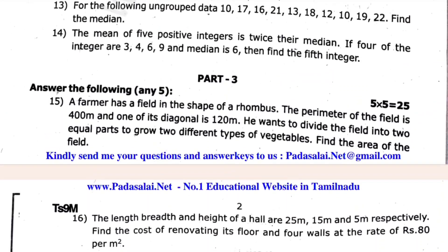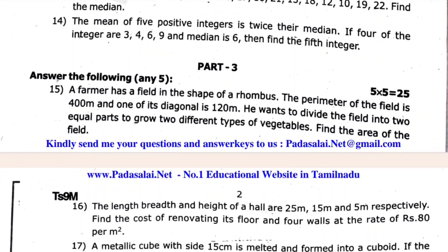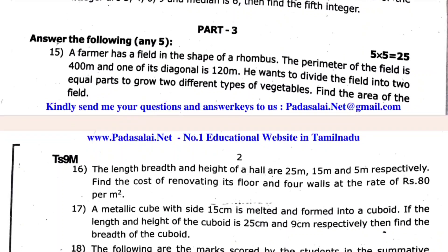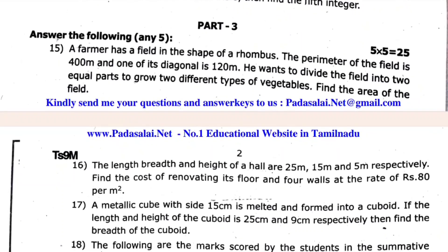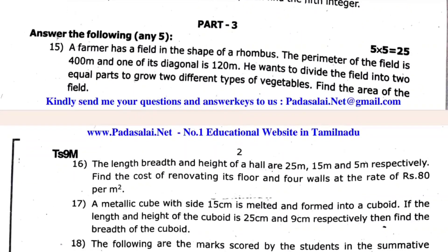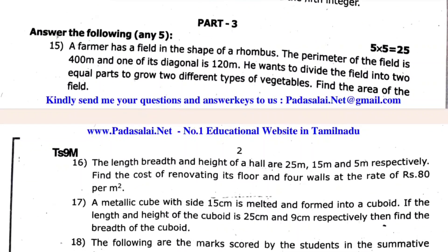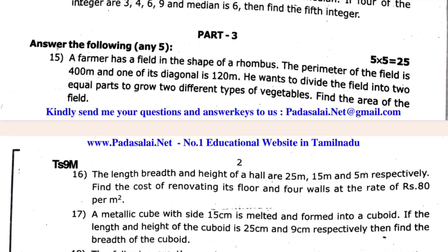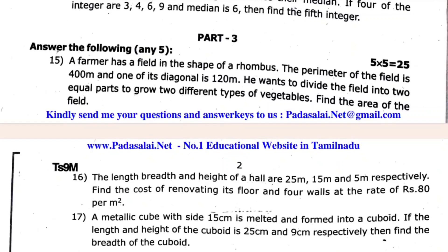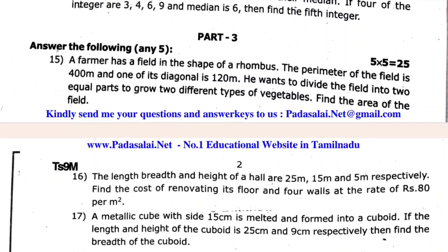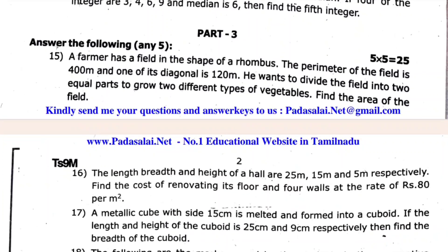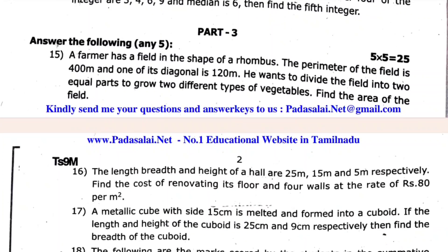The first is: the farmer has a field in the shape of a rhombus. The perimeter of the field is 400m and one of its diagonals is 120m. He wants to divide the field into two equal parts to grow two different types of vegetables. Find the area of the field.